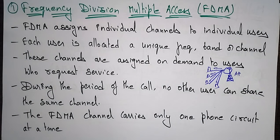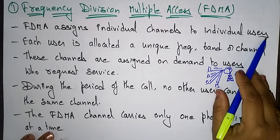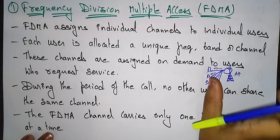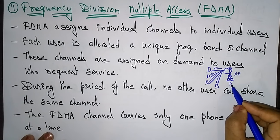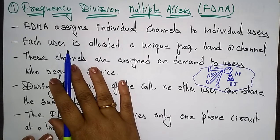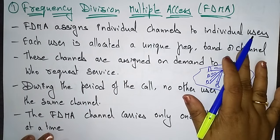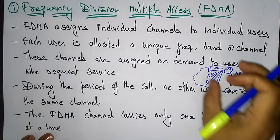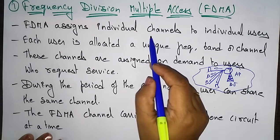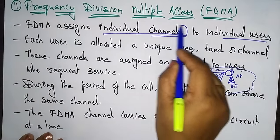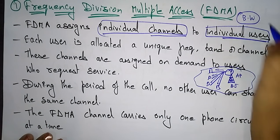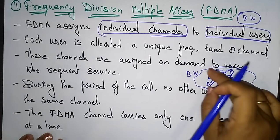In Frequency Division Multiple Access, FDMA assigns individual channels to individual users. The base station provides signals to all devices within its range by assigning individual channels to each user. The main thing to remember is that the channels must be divided among all users within the available bandwidth.